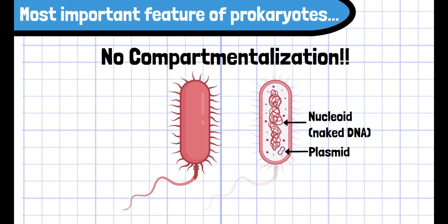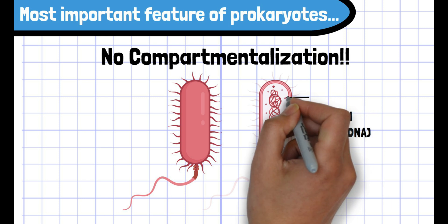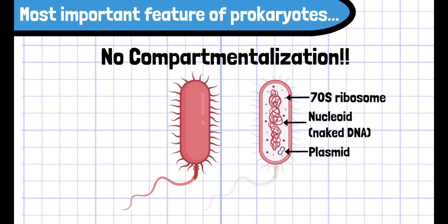They have 70S ribosomes in the cytoplasm, but again, it is smaller than the eukaryotic 80S ribosome.